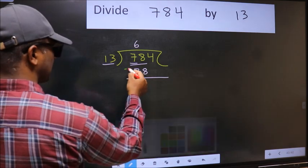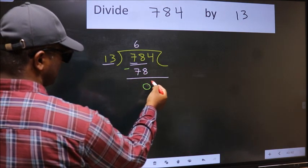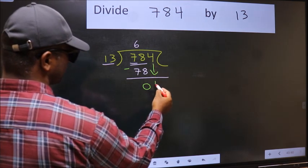Now we should subtract. 78 minus 78, 0. After this, bring down the beside number. So 4 down.